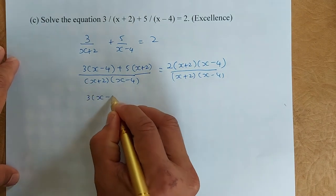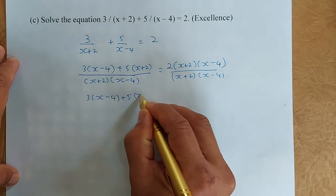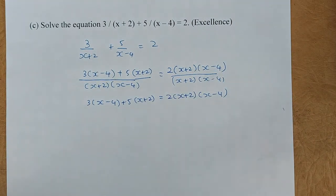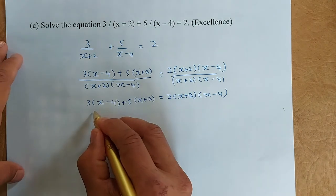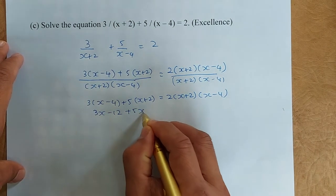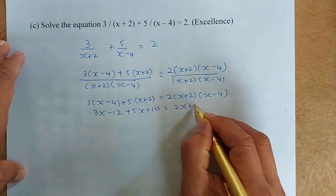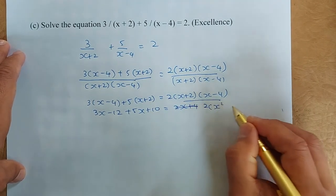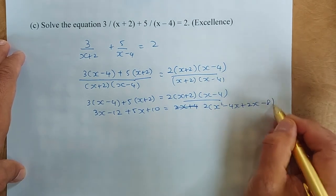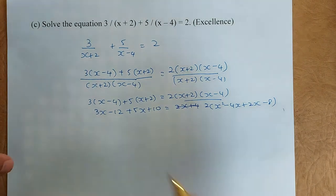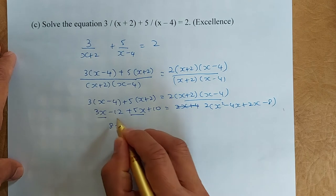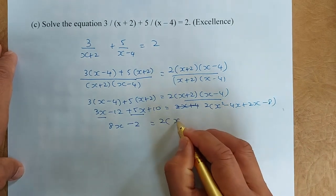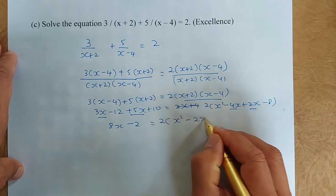Since they all share the same denominator, we can write: 3 bracket (x minus 4) plus 5 bracket (x plus 2) equals 2 times (x plus 2)(x minus 4). Expanding the left side gives 3x minus 12 plus 5x plus 10. On the right side, first expand the brackets: 2 bracket (x squared minus 4x plus 2x minus 8). Simplifying the left: 8x minus 2. On the right: 2 bracket (x squared minus 2x minus 8).